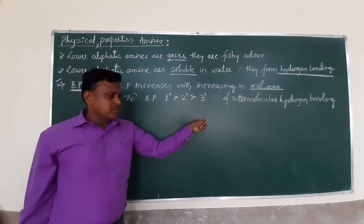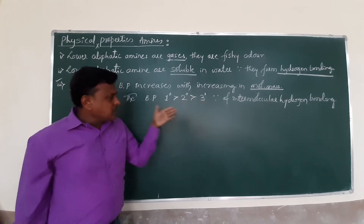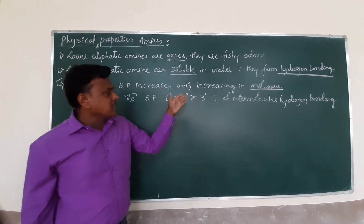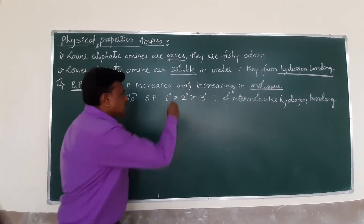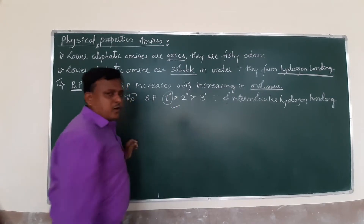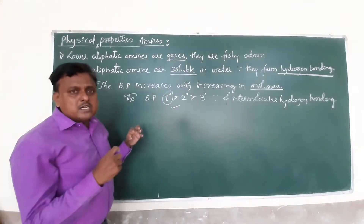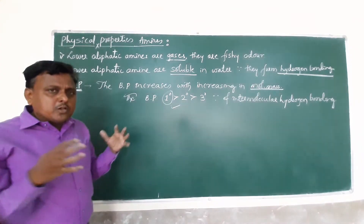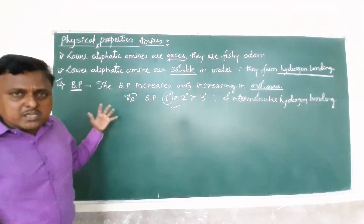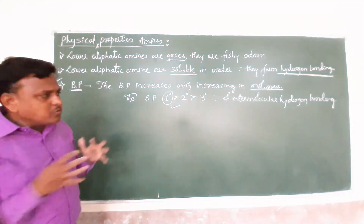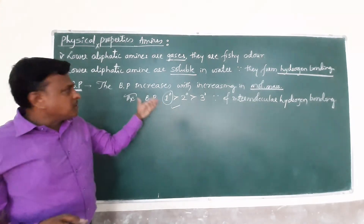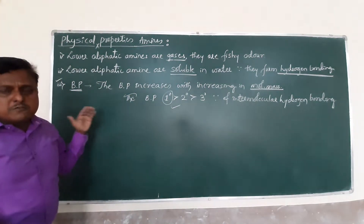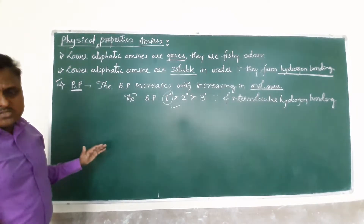Aliphatic amines are of three types: primary, secondary, and tertiary amines. Among these, primary amines have the greatest boiling point, then secondary, then tertiary. This is because primary amines easily form intermolecular hydrogen bonding, which enhances molecular size, and due to increasing molecular size, the boiling point increases.